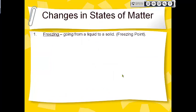What are the changes in states of matter? These are all physical changes. Freezing is when you go from a liquid to a solid, and the temperature at which that happens is called the freezing point. Different types of matter have different freezing points. For instance, water freezes at zero degrees Celsius or 32 degrees Fahrenheit, whereas metal freezes at a much higher temperature.